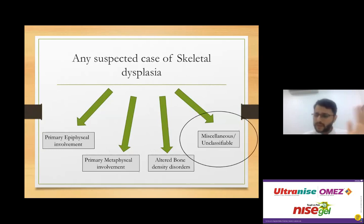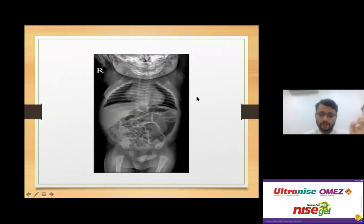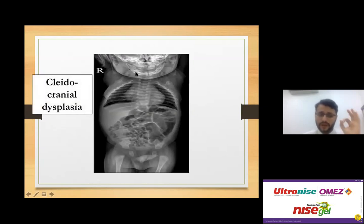Miscellaneous or unclassifiable disorders include nail-patella syndrome — presenting with disorders of the nail, iliac wings, and small patella — and cleidocranial dysplasia, which characteristically shows absent clavicles and skull bone deformities.